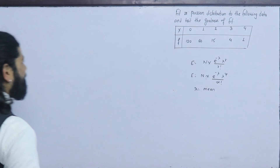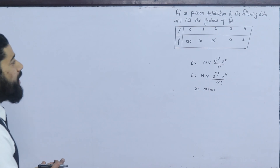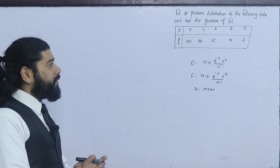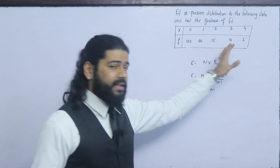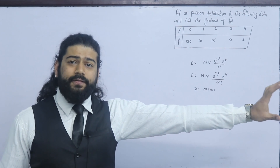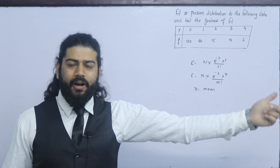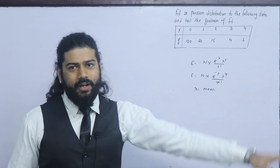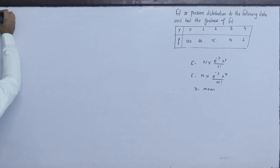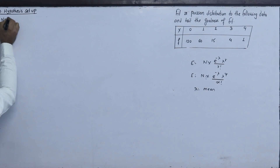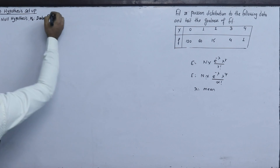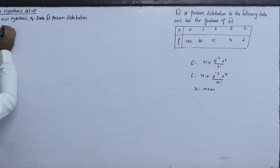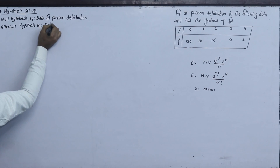In this hypothesis test for the Poisson distribution, we test goodness of fit using observed frequency. The null hypothesis is: data fits the Poisson distribution. The alternate hypothesis is: data does not fit the Poisson distribution.